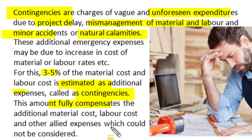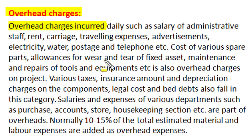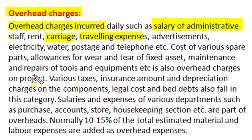This contingency amount of 3 to 5 percent can fully compensate the additional material cost, labor cost, or other allied expenses which otherwise could not be considered in detailed estimation work. In any project execution, certain overhead charges are incurred daily on the project organization, though they are not directly connected to project execution. These overhead charges include salary of all administrative staff, rent component of different positions for the organization, carry charges for material handling, traveling expenses of staff members, advertisement, electricity, water charges, postage, telephone, and communication charges.